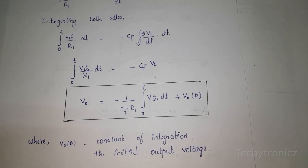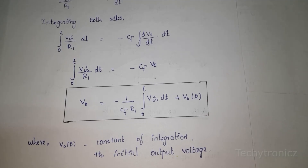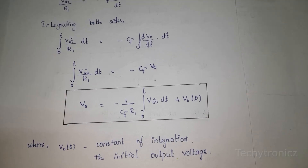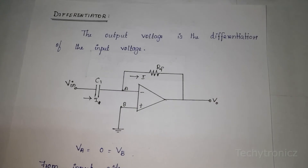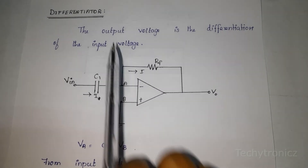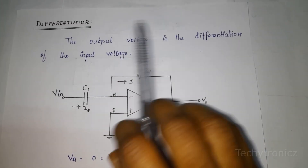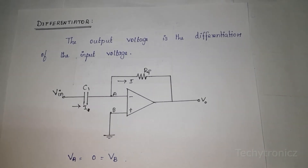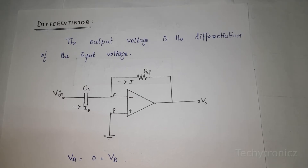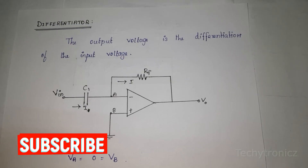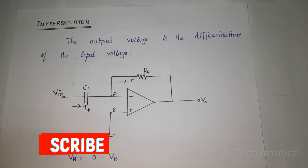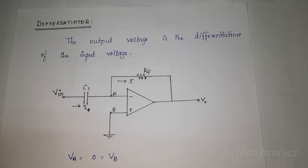The main advantage of such an active integrator is the large time constant. Next, we will see what is a differentiator. The output voltage is the differentiation of the input voltage — that is called a differentiator. This is also an active differentiator because we are using the active device operational amplifier. Next, we will calculate the output voltage of the differentiator.